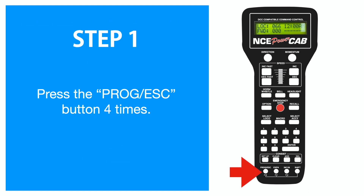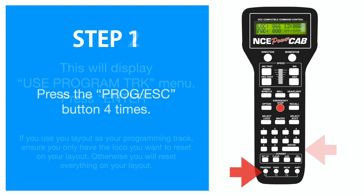First we need to access the 'Use Programming Track' menu. We do this by pressing the Program/Escape button four times. This button can be found in the bottom left-hand corner of your controller. Alternatively, you can press Program/Escape and then button number four — that will take you to the same menu.